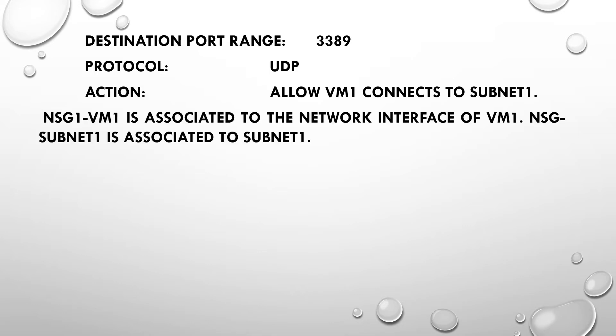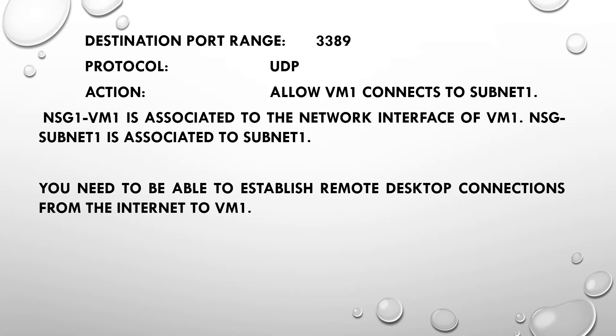NSG-VM1 is associated to the network interface of VM1. NSG-Subnet1 is associated to Subnet 1. You need to be able to establish remote desktop connections from the internet to VM1.